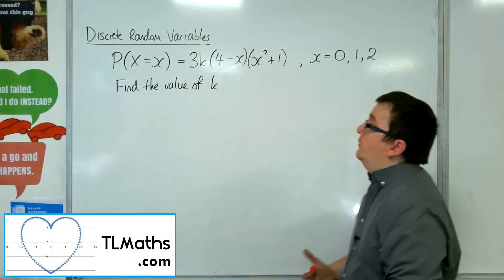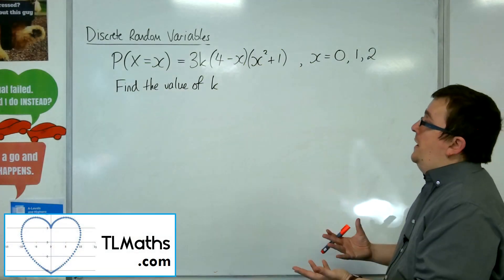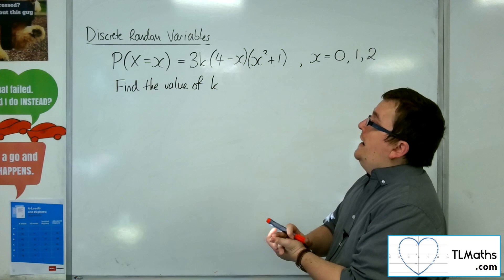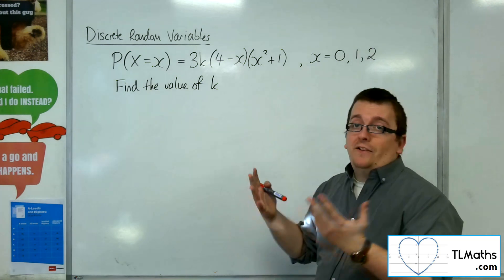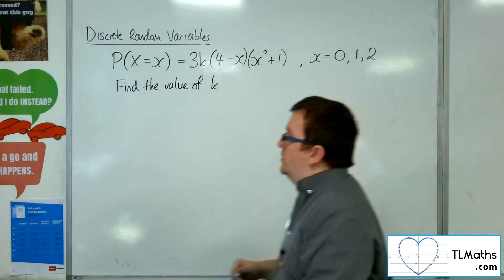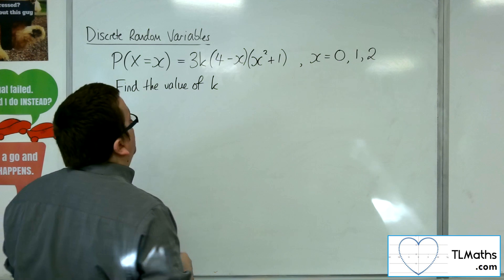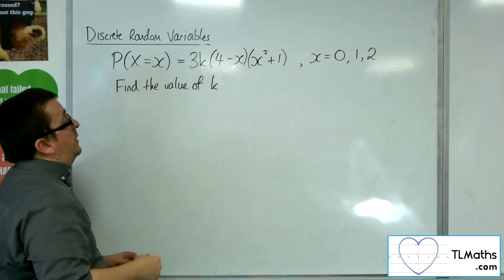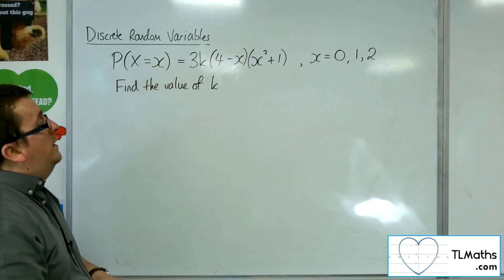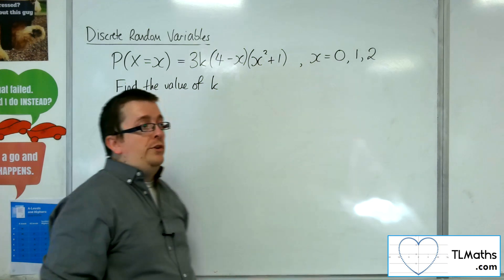We're going to go through another example of finding the value of k from a discrete probability distribution given as a function. For this one, we've got 3k times (4 minus x) times (x squared plus 1), and x can take 0, 1, or 2.